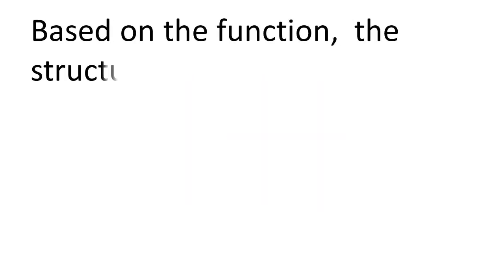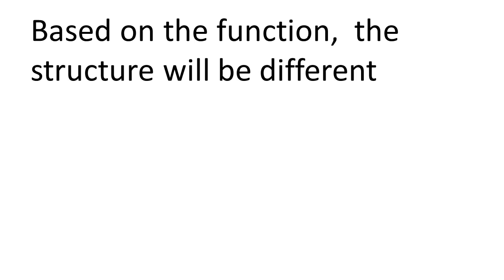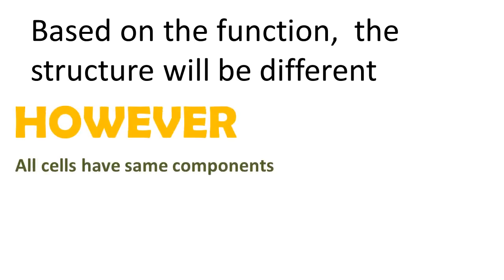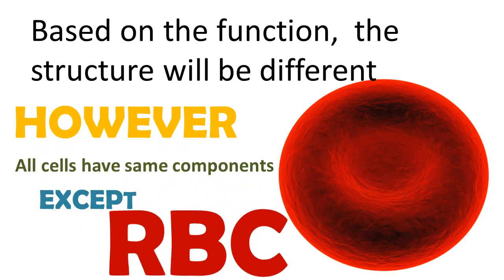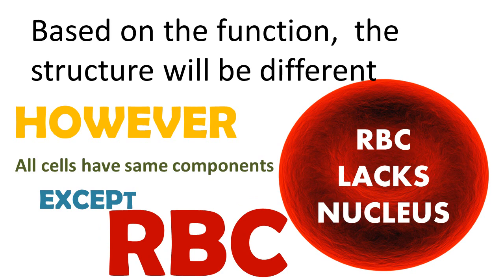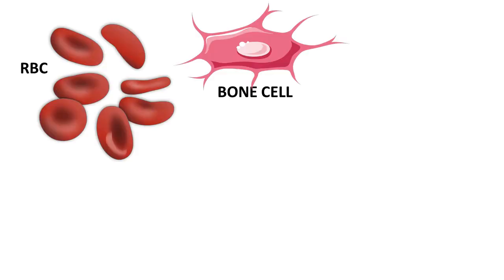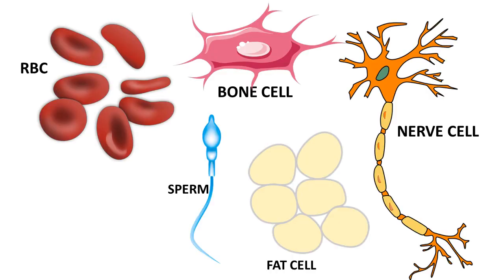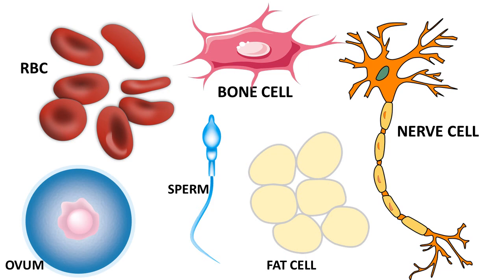Not all cells have the same components. Cell function and structure can differ. An exception is RBC — red blood cells. RBC, bone cells, nerve cells, fat cells, sperm, and ovum all differ in structure and function in the human body. This is called division of labor.